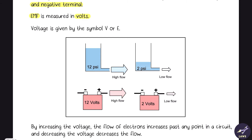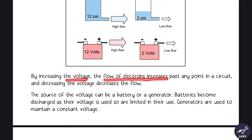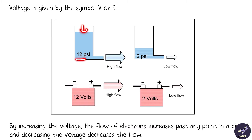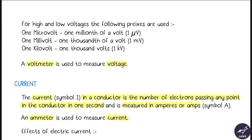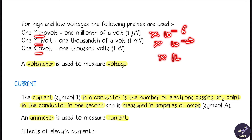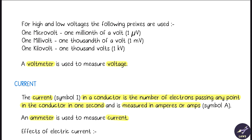By increasing the voltage, the flow of electrons increases; by decreasing the voltage, the electron flow decreases. Using the water analogy: at 12 psi pressure the rate of flow is high, at 2 psi the rate of flow is less — similarly, higher voltage means higher electron flow. Units to remember: one microvolt is 10⁻⁶, milli is 10⁻³, and kilo is 10³. The device used to measure voltage is a voltmeter.